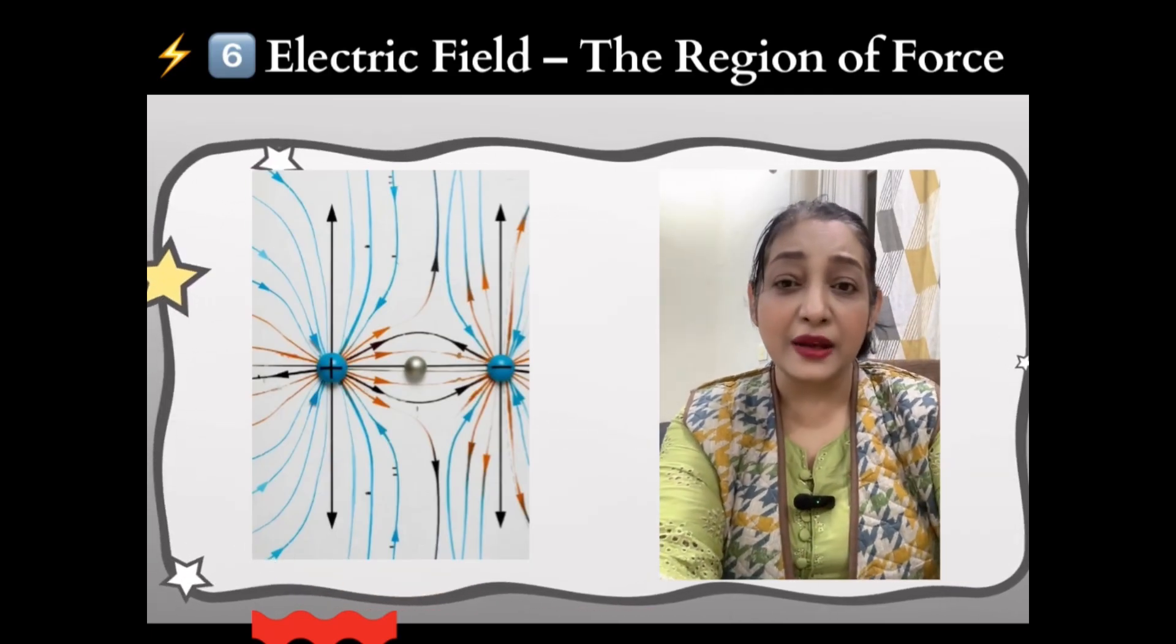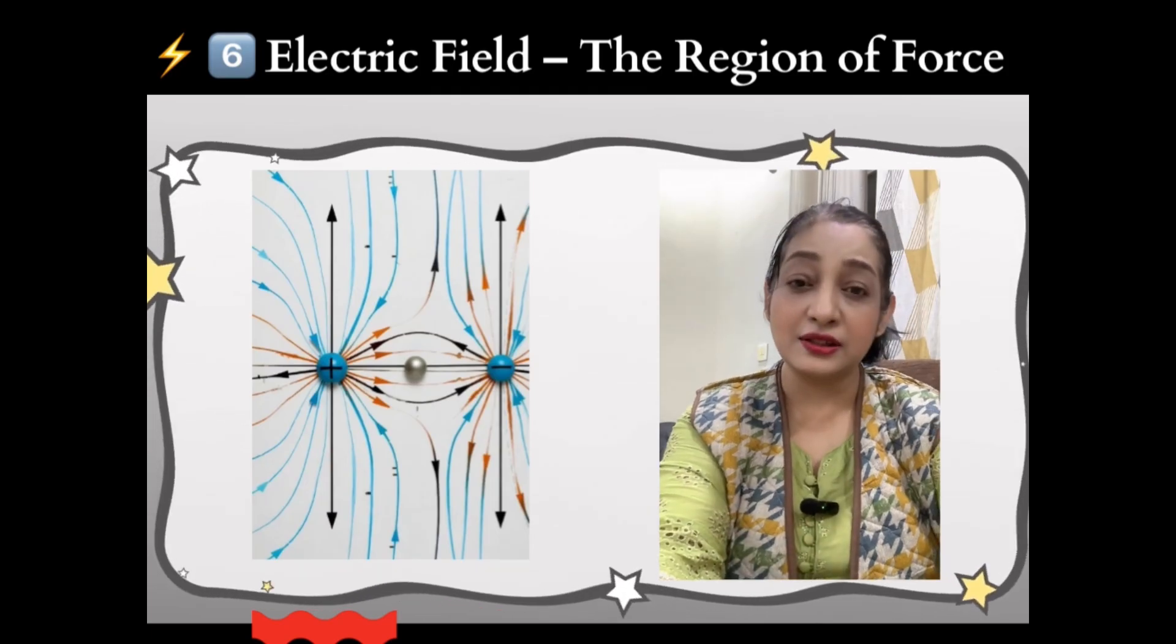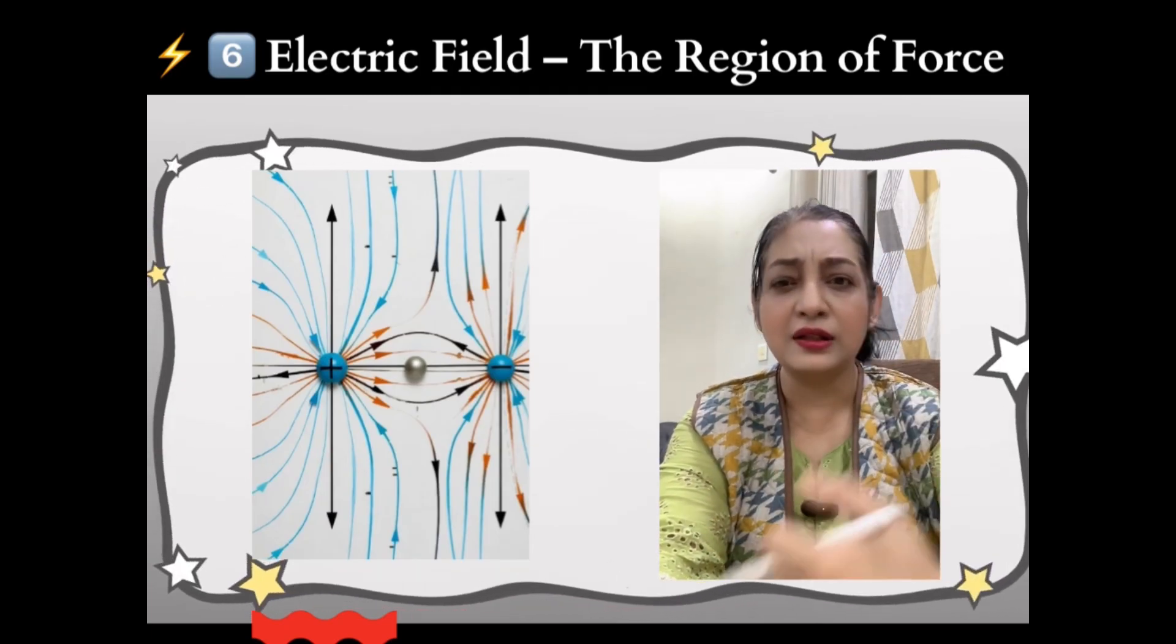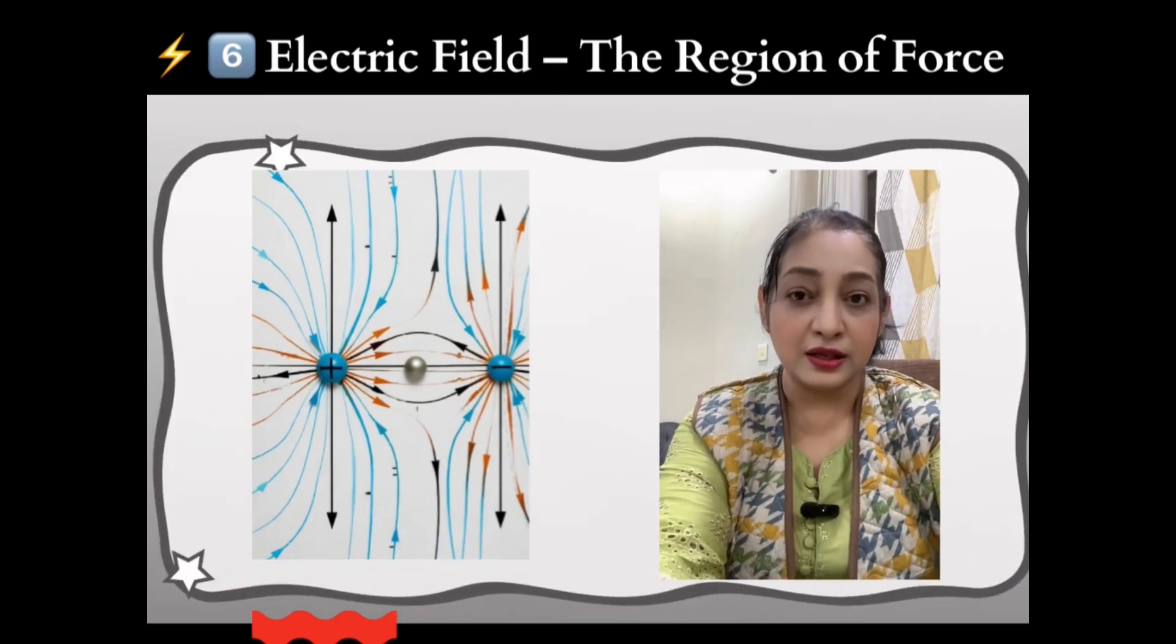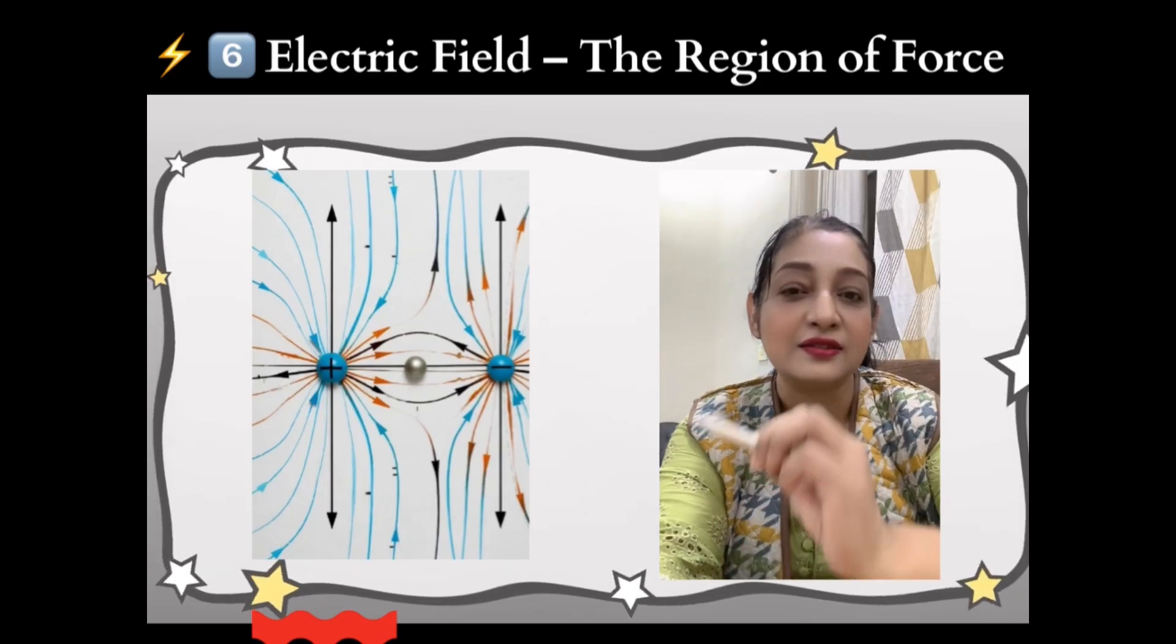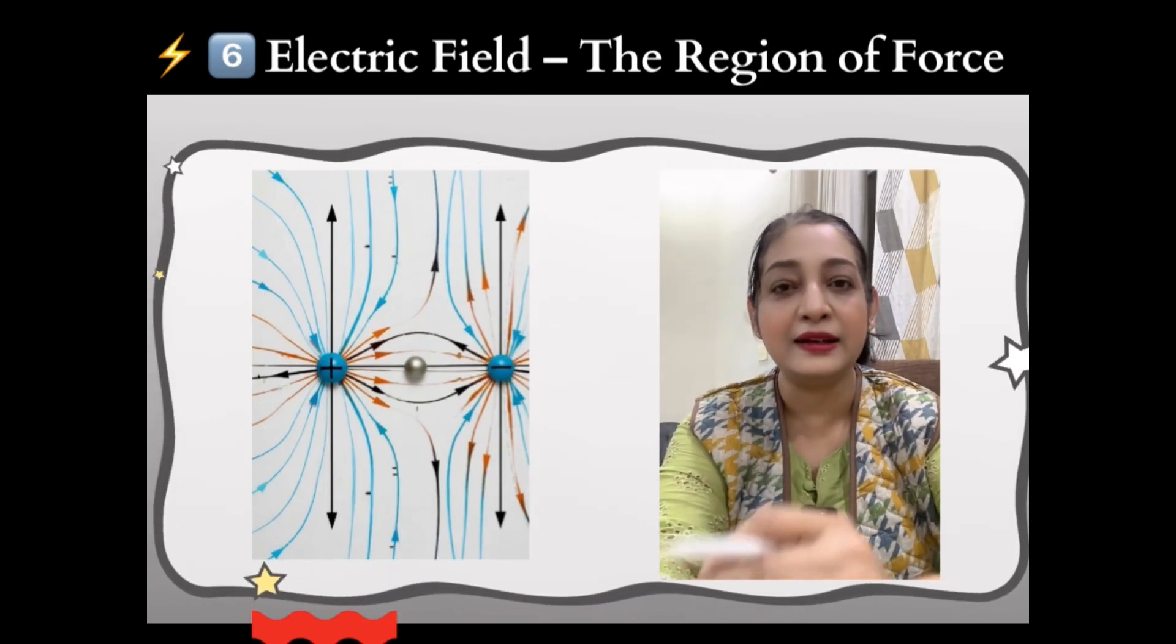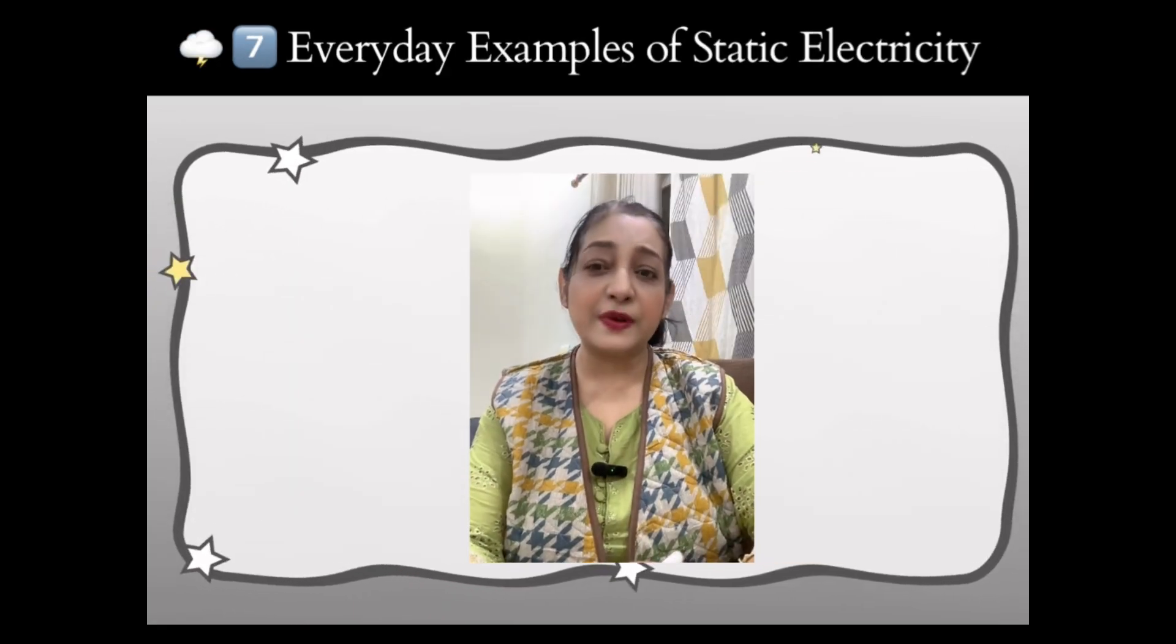Now another example I am showing here: field around a positive charge, lines go outward. Field around the negative charge, lines go inward. Field between positive charges, straight uniform lines between plus and minus.